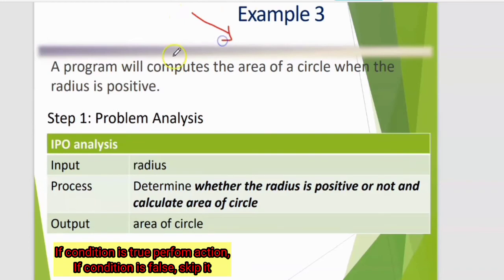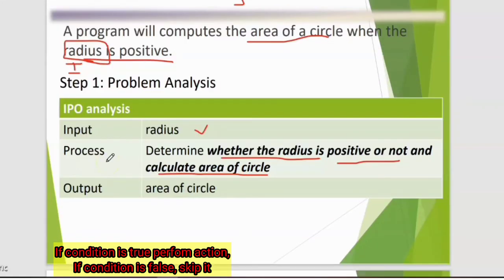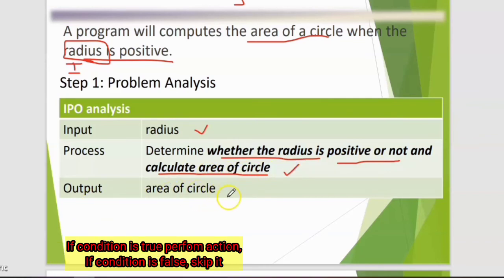Third example: a program will compute the area of a circle when the radius is positive. First step, still remember to identify IPO — input, process, and output. The input is: radius. The process is: determine whether the radius is positive or not, and calculate the area of circle. The output is: area of circle.